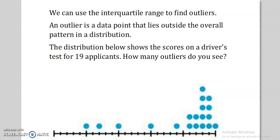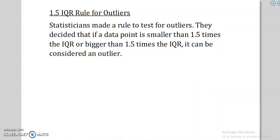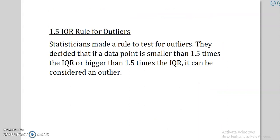So statisticians had to make a decision. They had to say this is going to be considered an outlier. And so they made a rule. And they said, if a number falls within this rule, we're going to call it an outlier. And the rule is called the 1.5 IQR rule for outliers.